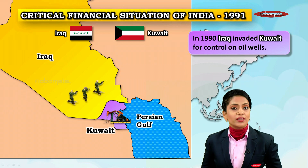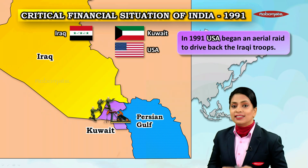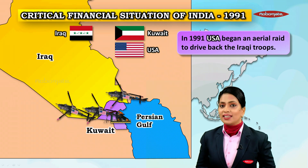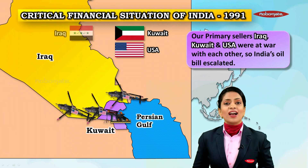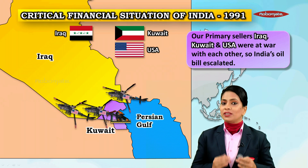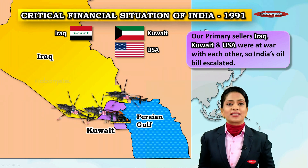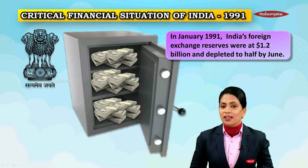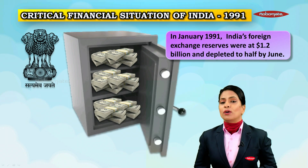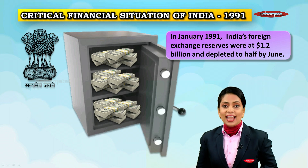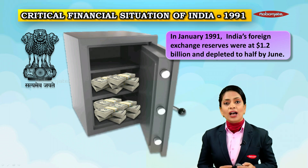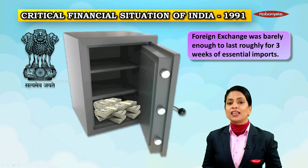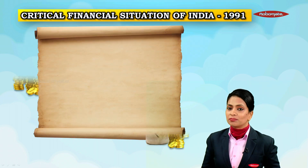Post-1991, the USSR disintegrated into Russia and 14 different countries, so our export earnings fell. In 1990, Iraq invaded Kuwait for control of oil wells. In 1991, the US began an aerial raid to drive back Iraqi troops. Our primary oil sellers — Iraq, Kuwait, and the USA — were at war with each other, and this impacted the Indian economy because our oil bills escalated. By January 1991, our Forex reserves were only at 1.2 billion dollars, and this depleted to half by June.